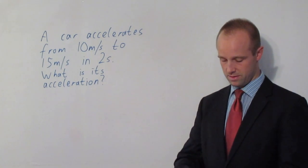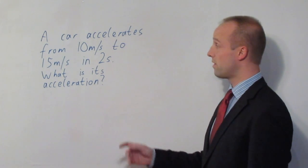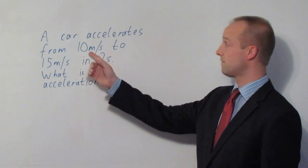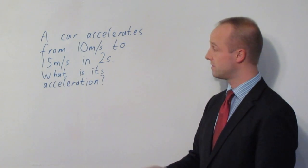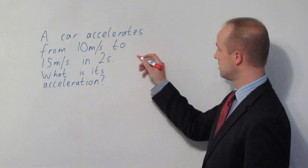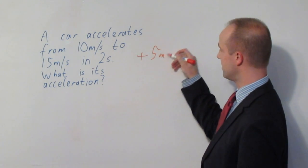When you look at the formula, all you need to worry about is how much has that velocity changed by. So it's gone from 10 meters a second to 15 meters a second. So the change in velocity there, the amount it's gone up by is plus 5 meters per second.